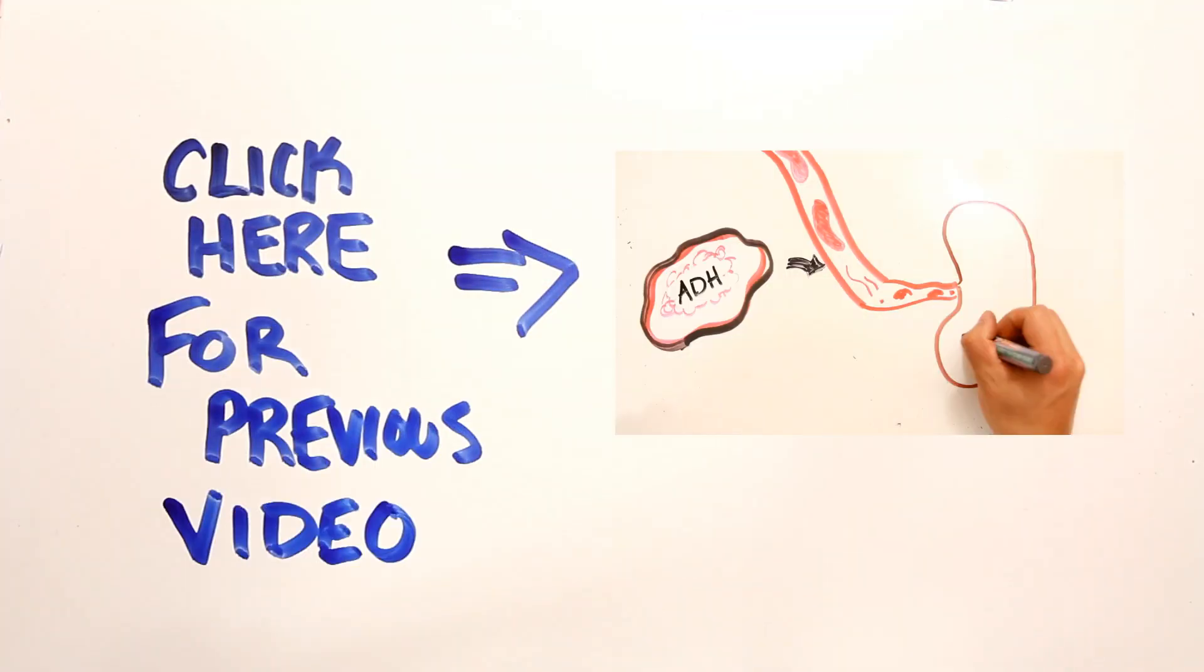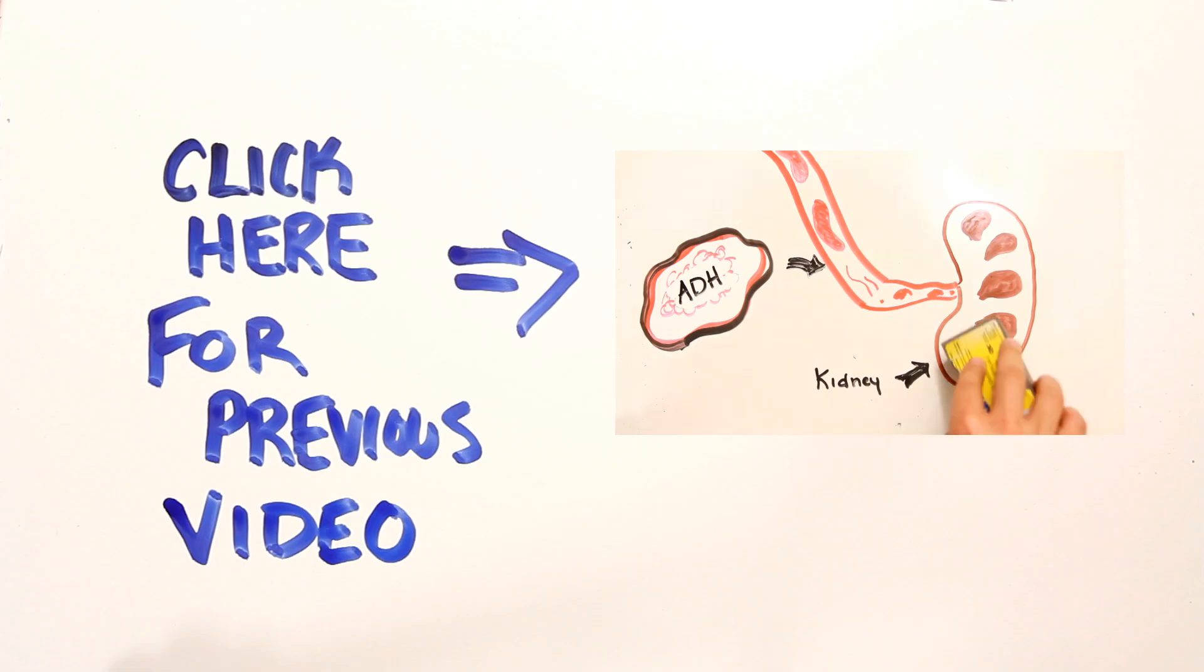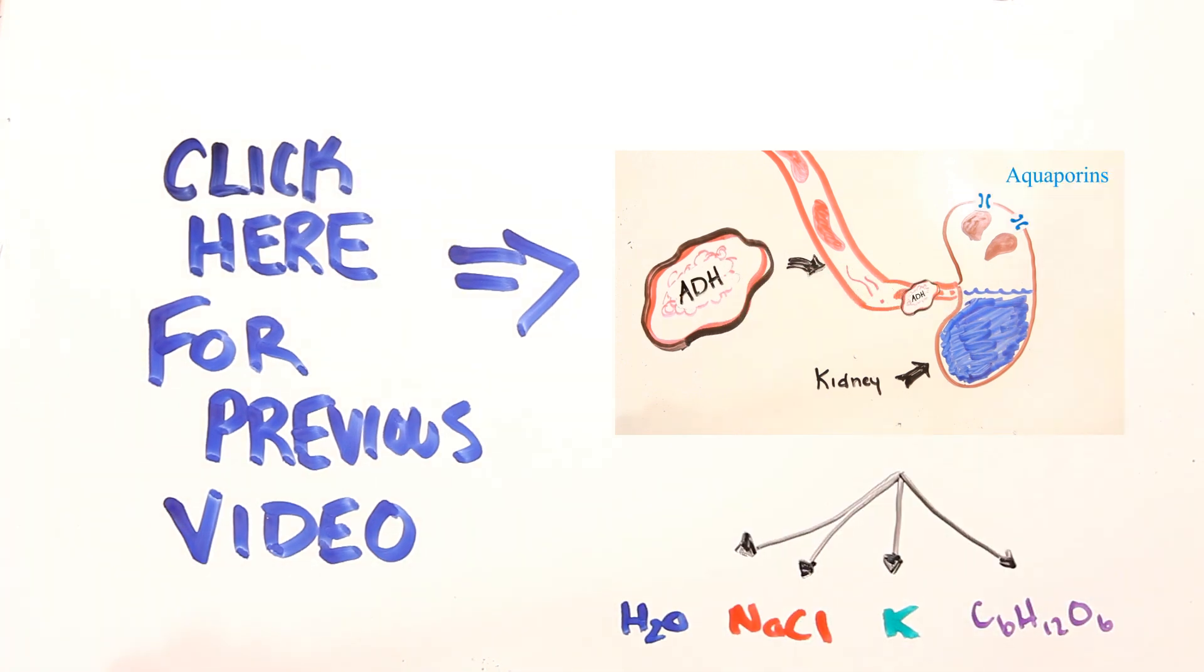In a previous video, which you can click here, we described the effects of alcohol on the brain and why it dehydrates you. Apart from just water, your body is also excreting many components such as salt, potassium, and glucose, which are required for normal muscle coordination and brain function.